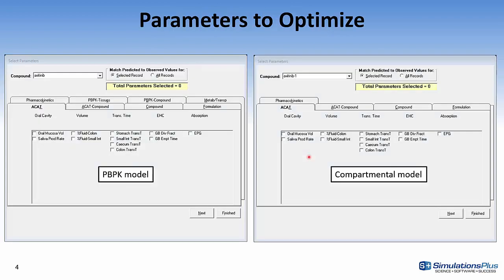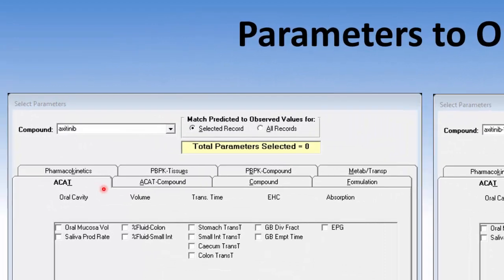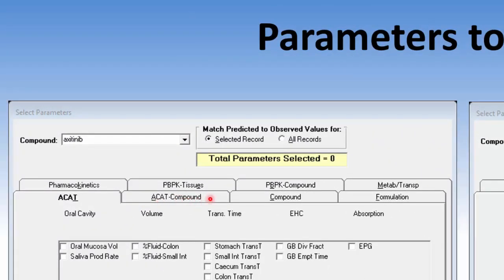These two dialog boxes are presented for the parameters to optimize. On the left, I show optimizing values for a PBPK model and on the right for a compartmental model. Some PBPK tabs on the left are not shown on the right because they aren't involved in the compartmental model. The parameters to optimize are broken up into ACAT parameters for the compound, compound parameters, formulation, pharmacokinetics, PBPK tissues, compound, metabolism, and transporter properties.